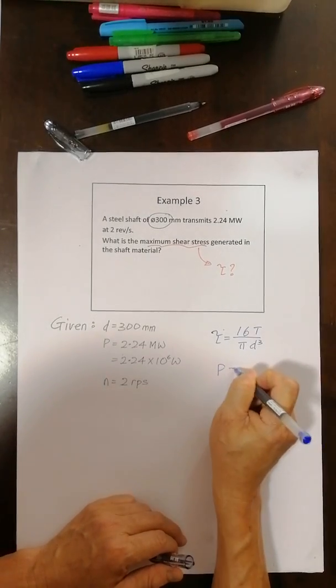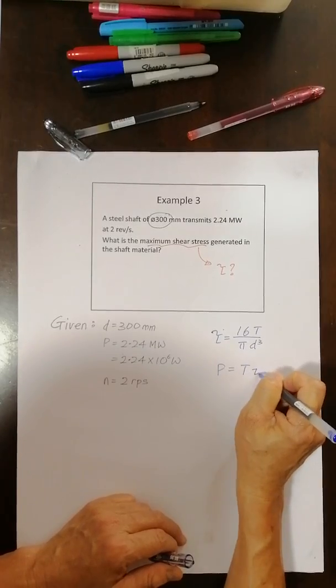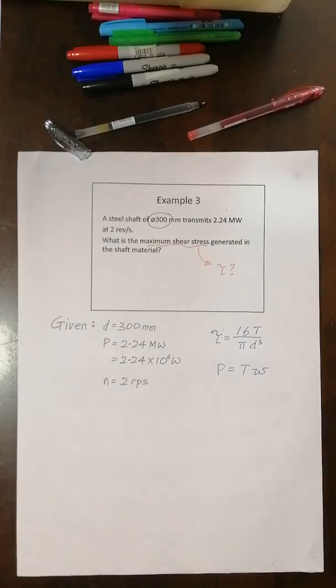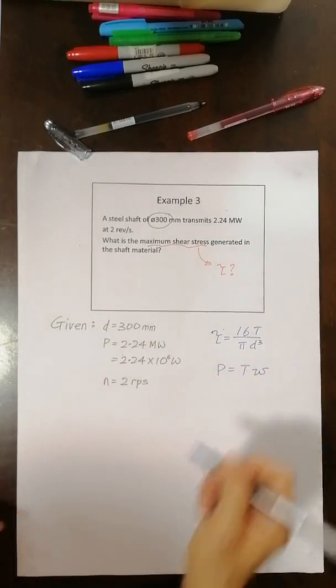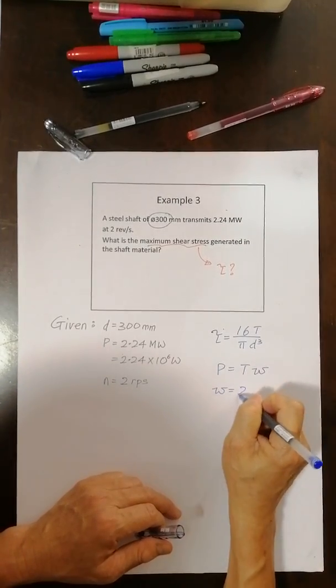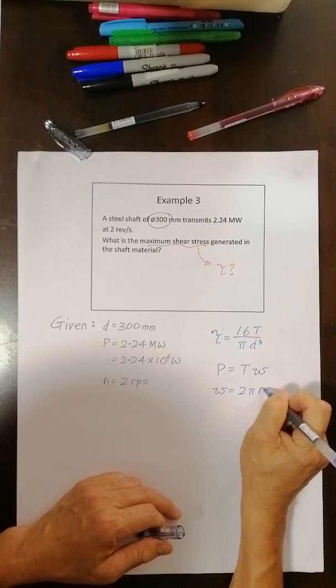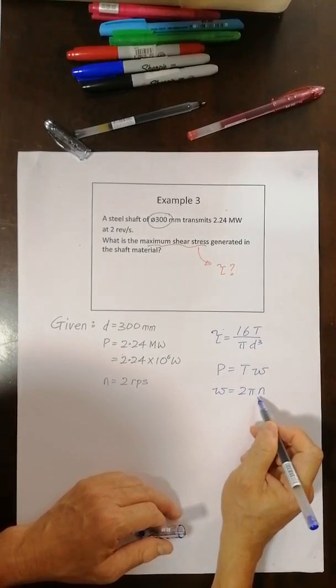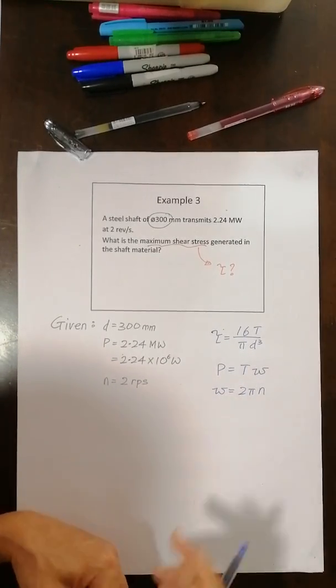That's the first equation I know. Then I realize the power. Power has this equation. Power equal to T times omega. And also omega is equal to 2 pi n. It's no longer divided by 60 because the unit is in seconds. So it's 2 pi n.